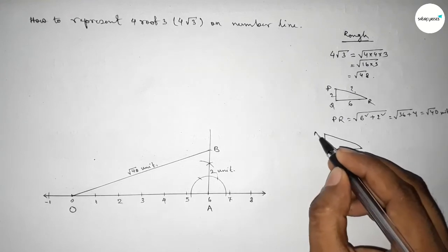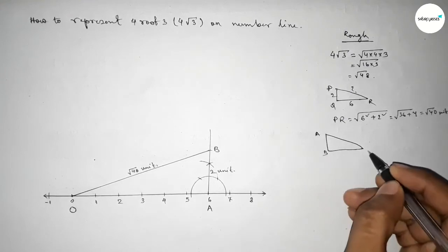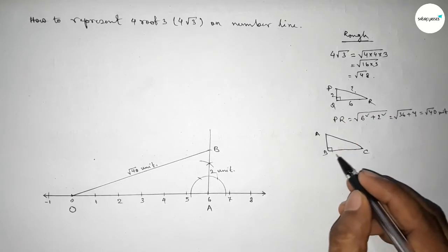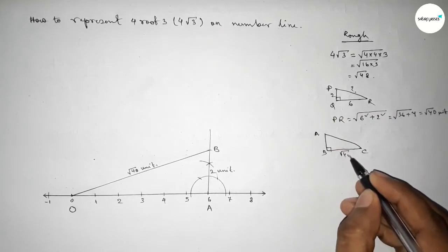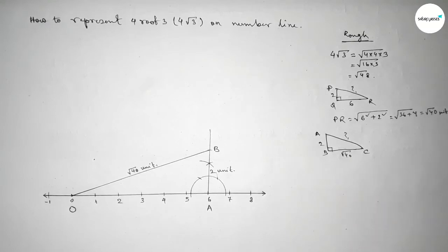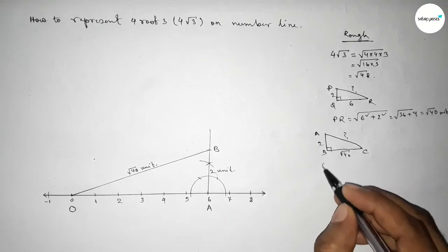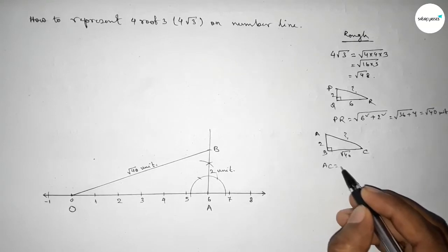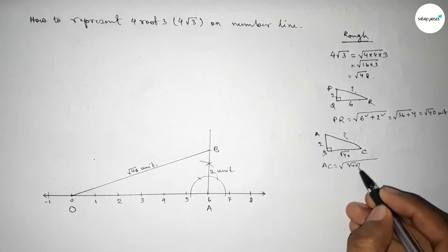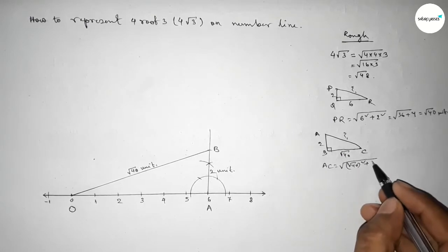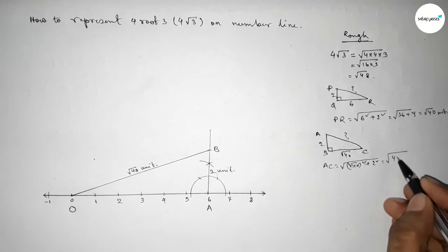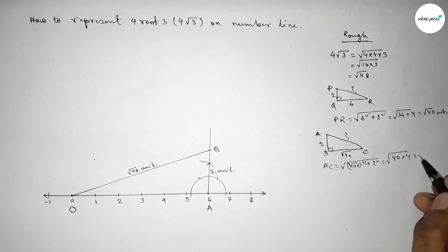Next we have to draw √44. Roughly drawing a right angle triangle ABC with base equal to √40 units and height 2 units. By Pythagoras theorem, hypotenuse = √((√40)² + 2²) = √(40 + 4) = √44 units.